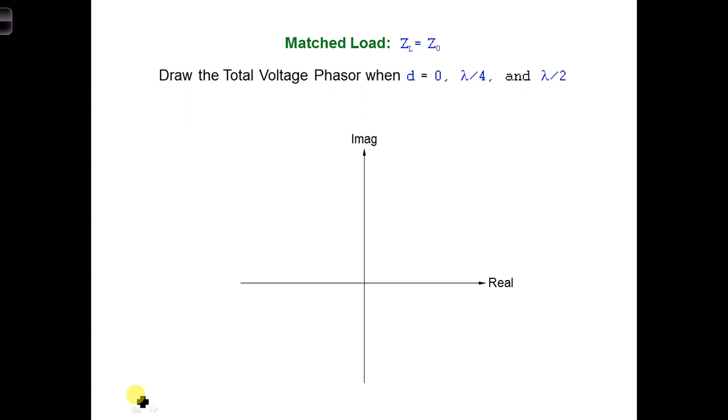For the matched load scenario we just looked at, let's draw the total voltage phasor at specific points along the transmission line, specifically we're going to draw it at these three positions: d equals zero at the load, and then lambda over four away from the load, and lambda over two away from the load. So first, just draw the voltage phasor at d equals zero.